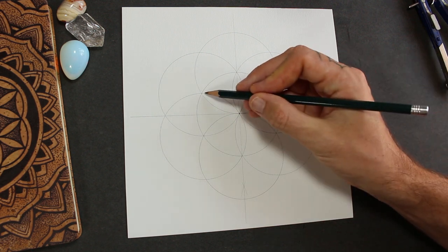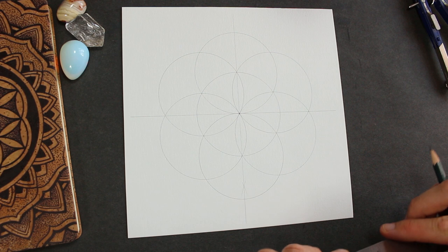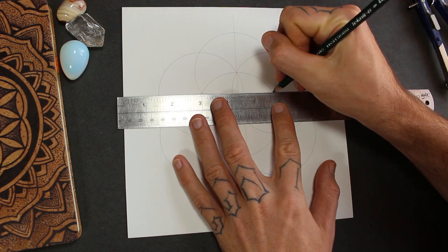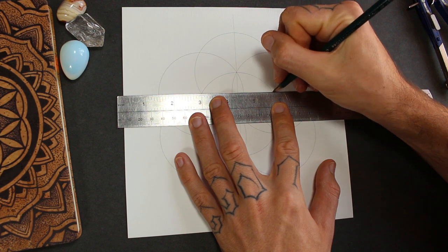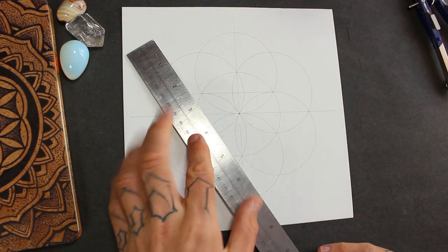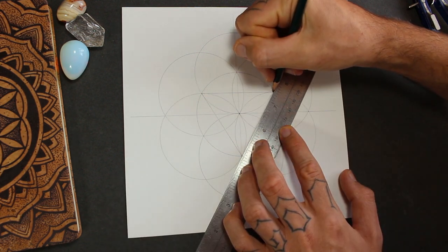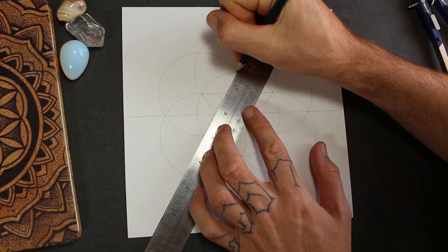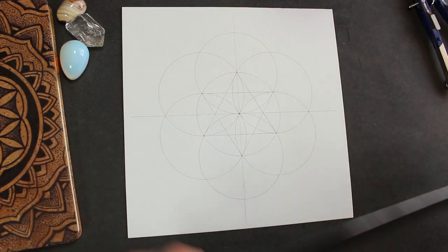And now we're going to use these six points in the seed of life to draw a hexagram, a six-pointed star. All we have to do is draw two triangles. One pointed down, and another one pointing up. There's your hexagram.